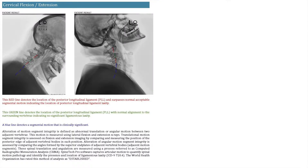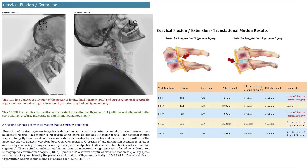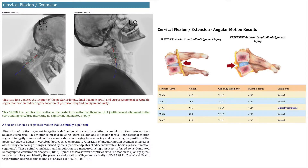What you're going to get with this analysis is flexion extension translational motion results, showing the measurement in flexion, the measurement in extension, the total patient result, clinically significant range, rateable limits, and the patient's rating. You're also going to be able to check their angular motion in degrees. If the angular motion is normal, it appears as normal; in red if it's rateable, and in blue if it's clinically significant.